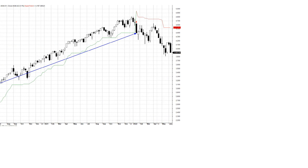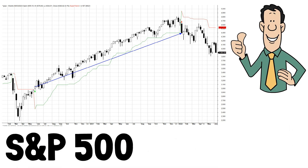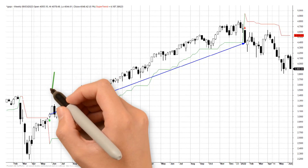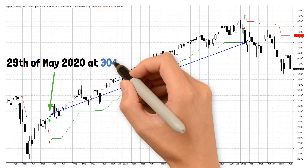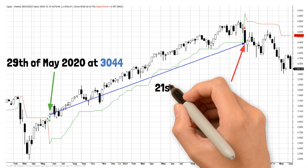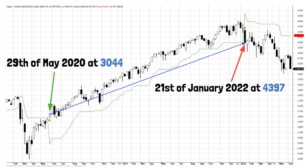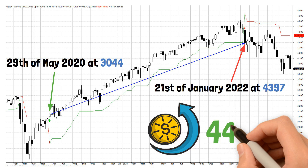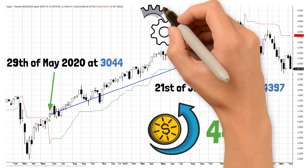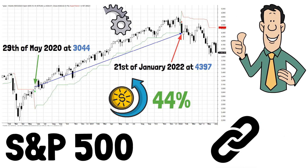A trade example is shown on the screen for S&P 500. The buy signal was triggered on the 29th of May 2020 at $30.44, and the sell signal triggered on the 21st of January 2022 at $43.97, resulting in a nice gain of 44%. Because the indicator is quite technical, we recommend reading our linked article below the video for further explanation.